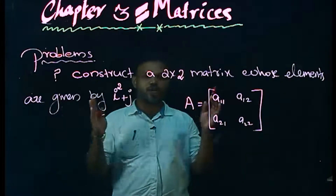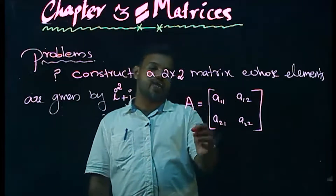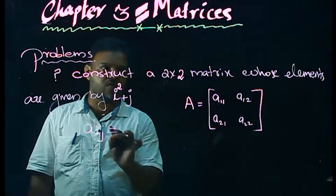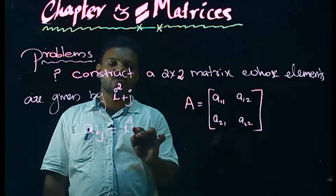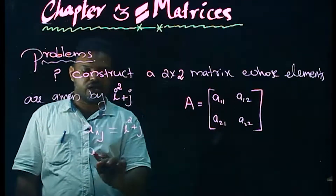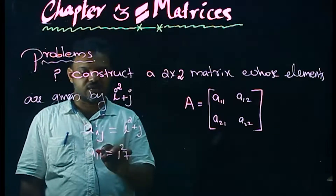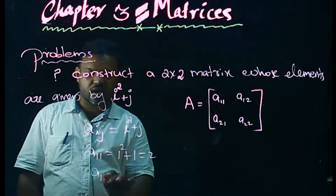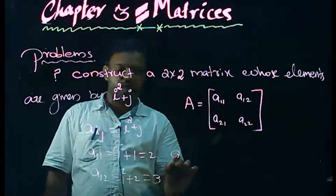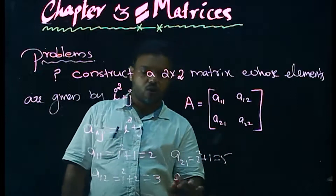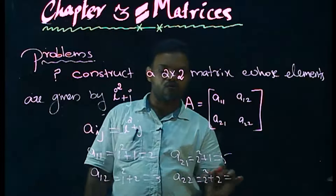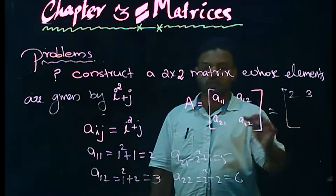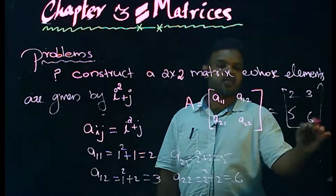Now construct a 2 by 2 matrix whose elements are given by aij equals i squared plus j. The general form is A equal to a11, a12, a21, a22. So A11 equals 1 squared plus 1 equals 2. A12 equals 1 squared plus 2 equals 3. A21 equals 2 squared plus 1 equals 5. A22 equals 2 squared plus 2 equals 6. So A11 equals 2, A12 equals 3, A21 equals 5, A22 equals 6.